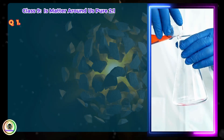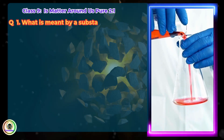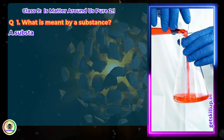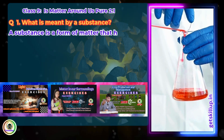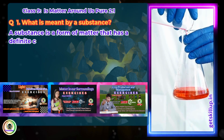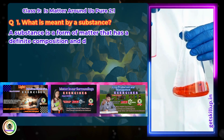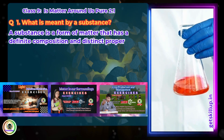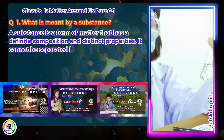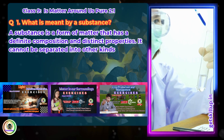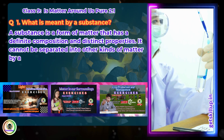Question 1: What is meant by a substance? A substance is a form of matter that has a definite composition and distinct properties. It cannot be separated into other kinds of matter by any physical process.